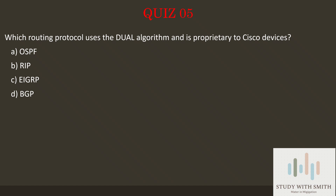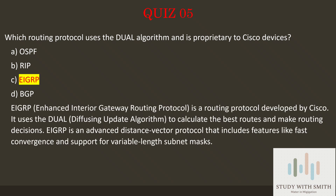Question 5: Which routing protocol uses the DUAL algorithm and is proprietary to Cisco devices? The answer is C: EIGRP. EIGRP (Enhanced Interior Gateway Routing Protocol) is a routing protocol developed by Cisco. It uses the DUAL (Diffusing Update Algorithm) to calculate the best routes and make routing decisions. EIGRP is an advanced distance vector protocol that includes features like fast convergence and support for variable-length subnet masking.